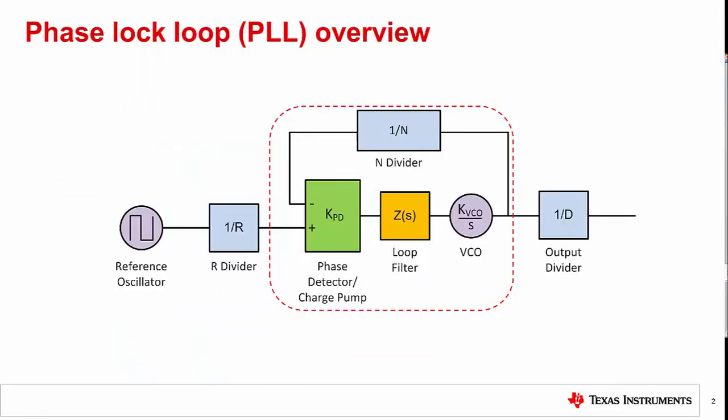Before we go into discussing noise characteristics, let's do a very quick PLL review. The purpose of the PLL is to phase align the signal from the R divider and the feedback signal from the N divider. Most of the phase noise transfer functions are related to the N divider, VCO, phase detector, and loop filter.